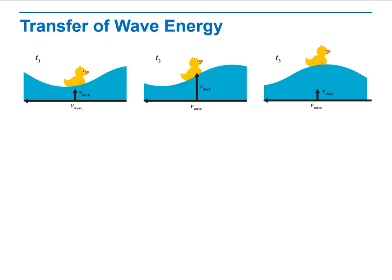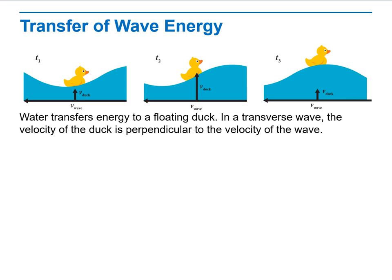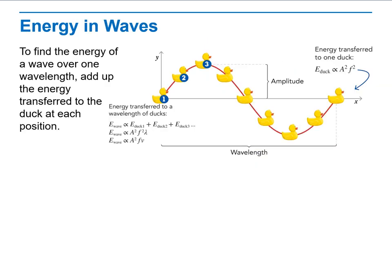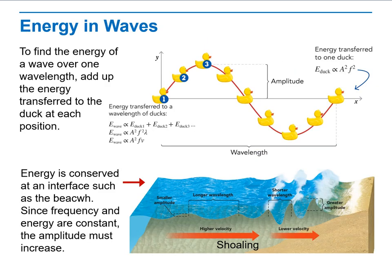Transfer of wave energy. Water transfers energy to a floating duck. In a transverse wave, the velocity of the duck is perpendicular to the velocity of the wave. We will discuss potential energy versus kinetic energy in each position. And last but not least, energy in a wave. The energy is conserved at an interface such as the beach, which since frequency and energy are constant, the amplitude must increase.